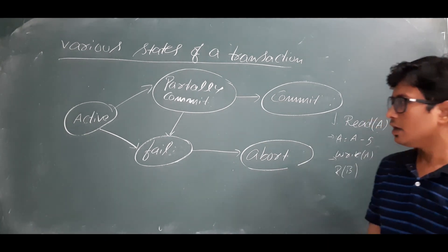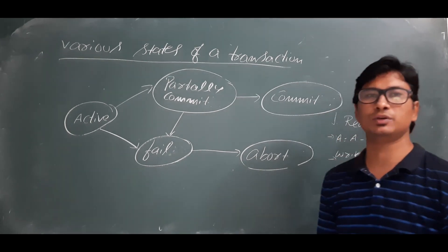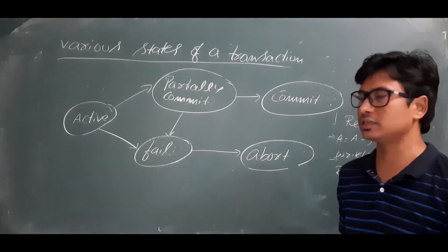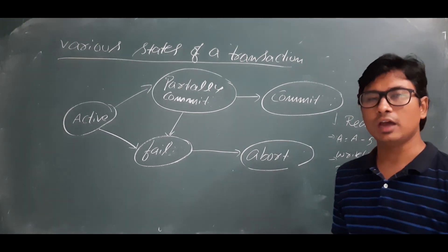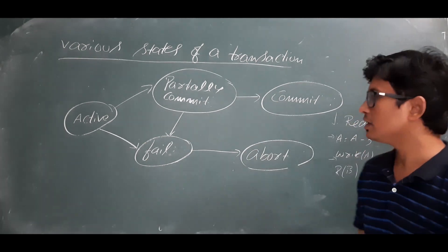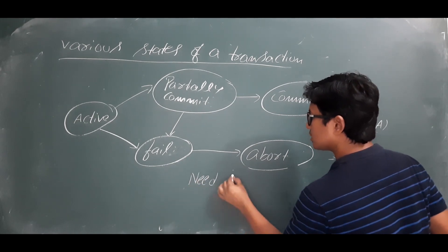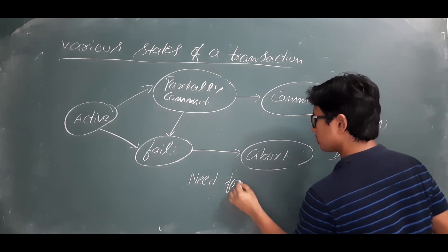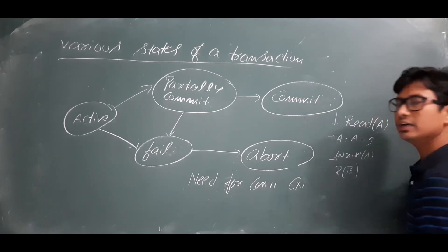Any transaction will always try to execute in a concurrent way. In the isolation property we discussed that a transaction should be executed in isolation, but when transactions are executed concurrently, we need to discuss what is the need for concurrent execution.